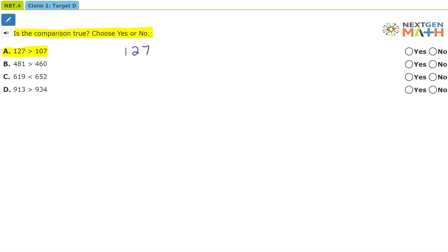127 looks like this. There's 100, there's 20, and seven ones. For 107, there's 100, no tens, and seven ones. So 127 is larger than 107.